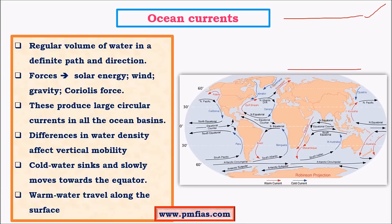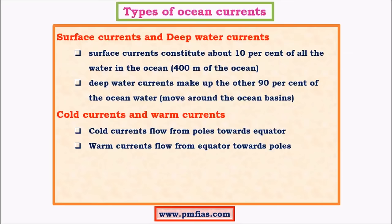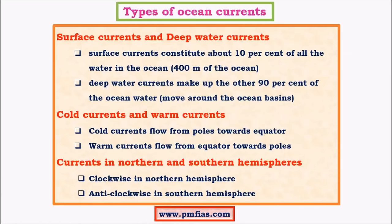Cold water flows at the bottom levels whereas warm water flows at the surface or subsurface levels. The subsurface layer is roughly 400 to 500 meters below the upper surface; within this layer, horizontal movement of warm water dominates. Currents are classified as surface currents or deep water currents, and as cold or warm currents. Cold currents flow from higher latitudes to lower latitudes, while warm currents flow from lower to higher latitudes. In the northern hemisphere currents move clockwise, in the southern hemisphere anti-clockwise, because of the Coriolis effect.